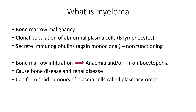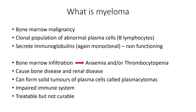The plasma cells can also form solid tumors called plasmacytomas, and these can be found anywhere in the body. All of this leads to an impaired immune system — there's too much bad stuff and not very much functioning polyclonal activity happening. It's treatable, but it is not curable.